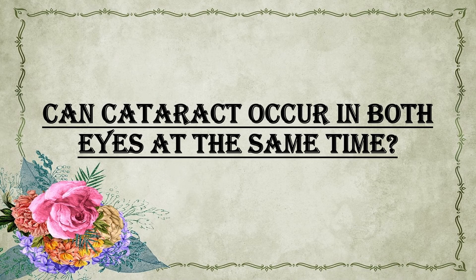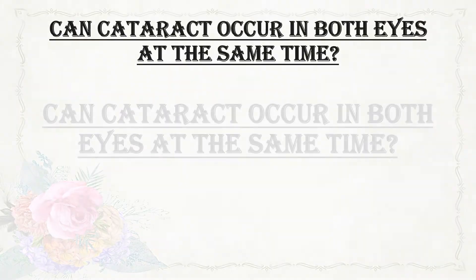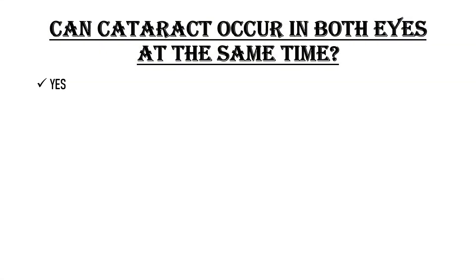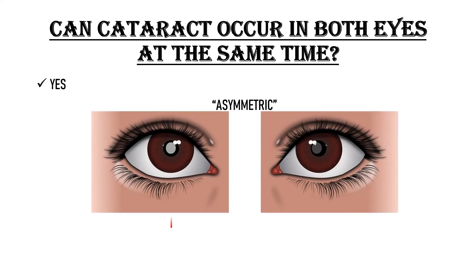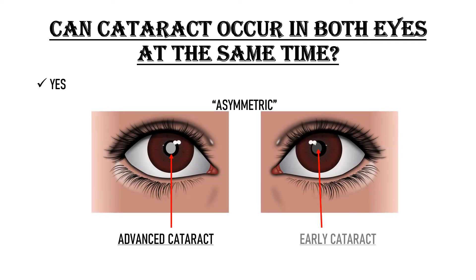Can cataract occur in both eyes at the same time? Yes, age-related cataracts can develop in one eye or both eyes together. Though when cataract is present in both eyes, it can sometimes be asymmetric — meaning one eye has a more advanced grade of cataract while the other may have an early cataract.